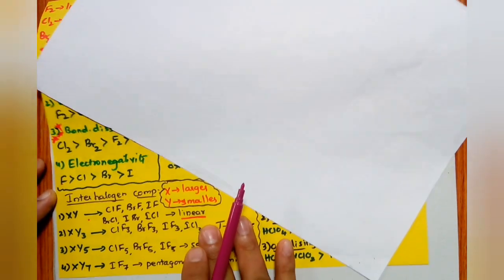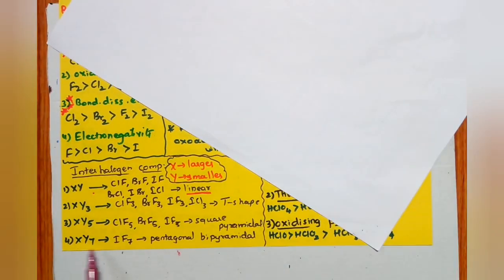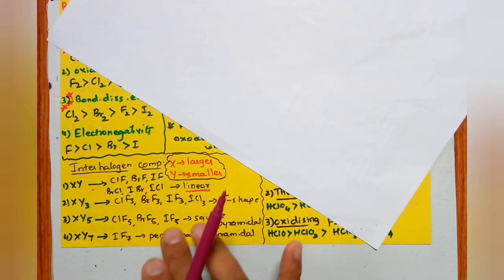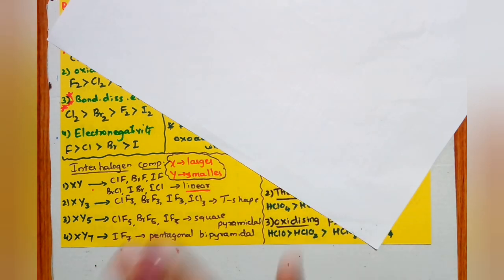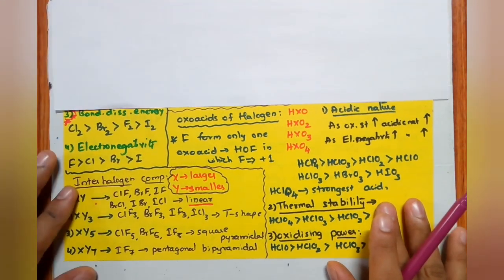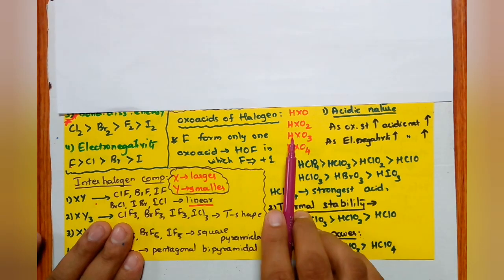Interhalogen compounds: XY (linear), XY3 (T-shape), XY5 (square pyramidal), XY7 (pentagonal bipyramidal). For XY: ClF, BrF, IF, BrCl, IBr, ICl are possible. For XY3: only four molecules — ClF3, BrF3, IF3, ICl3. For XY5: ClF5, BrF5, IF5 — square pyramidal. For XY7: only IF7 is possible — pentagonal bipyramidal structure.